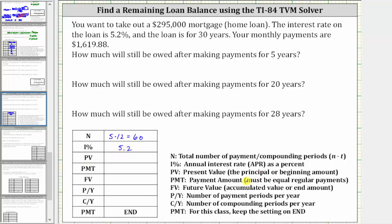PV is the present value, or the beginning amount of the loan, which is 295,000. This amount is positive because you are receiving this amount of money. PMT stands for the monthly payment amount, which is $1,619.88. But because you are paying this amount, we enter negative 1,619.88.